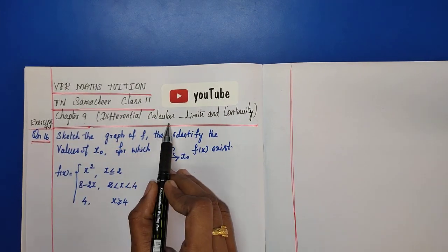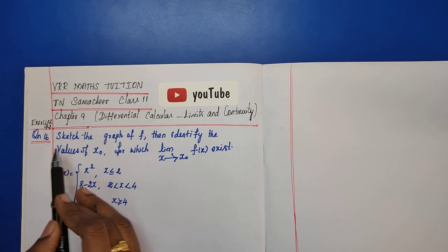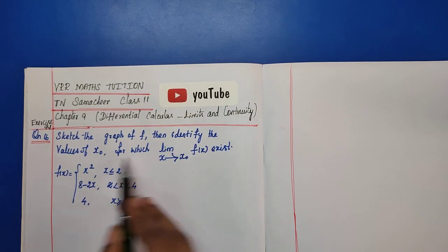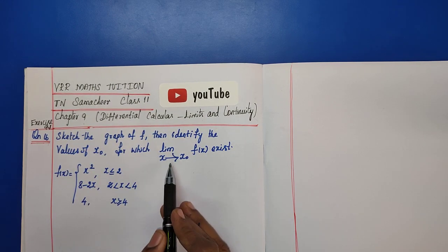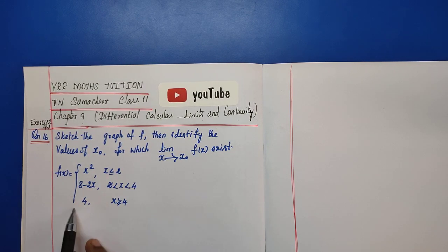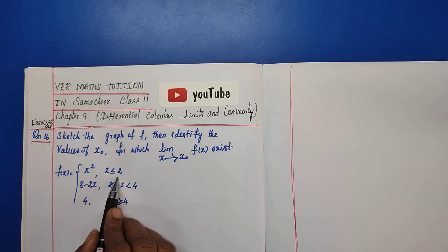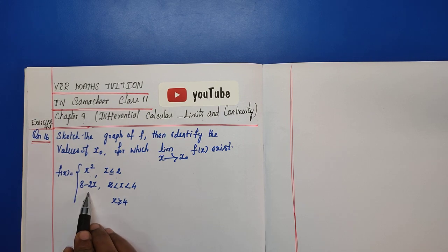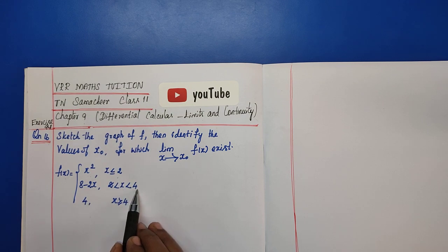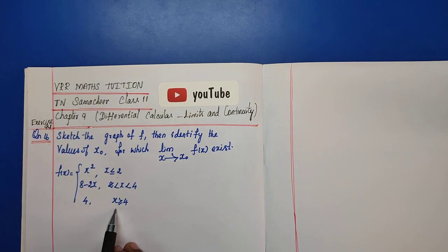Chapter 9, Differential Calculus: Limits and Continuity, Exercise 9.1, Question number 16. Sketch the graph of f, then identify the values of x₀ for which the limit as x tends to x₀ of f(x) exists. The function f(x) is defined as: x² if x ≤ 2; 8 minus 2x if 2 < x < 4; and 4 if x ≥ 4.